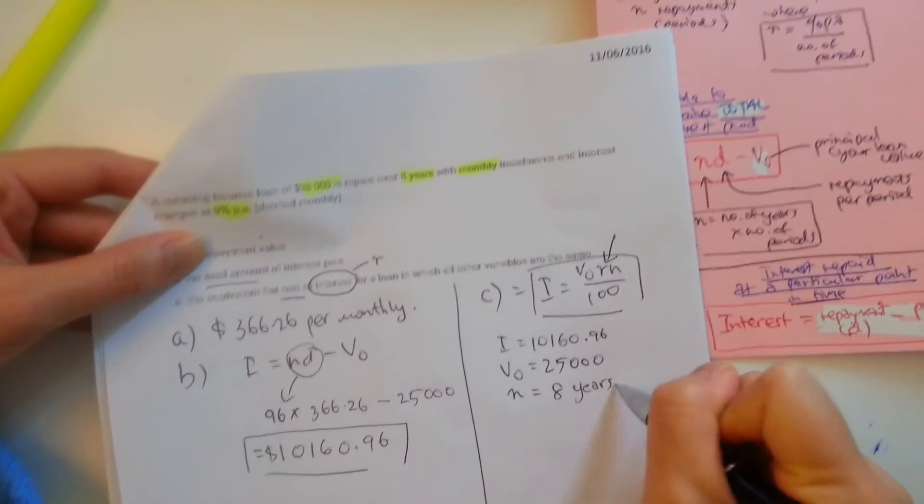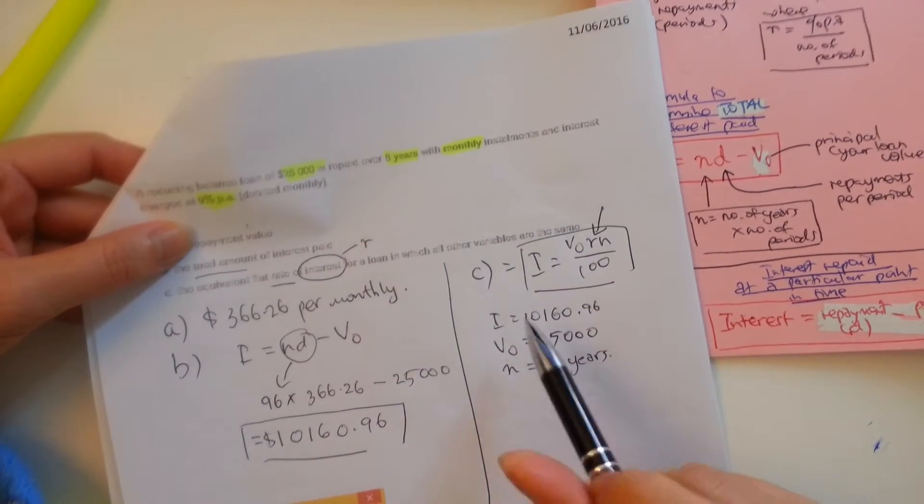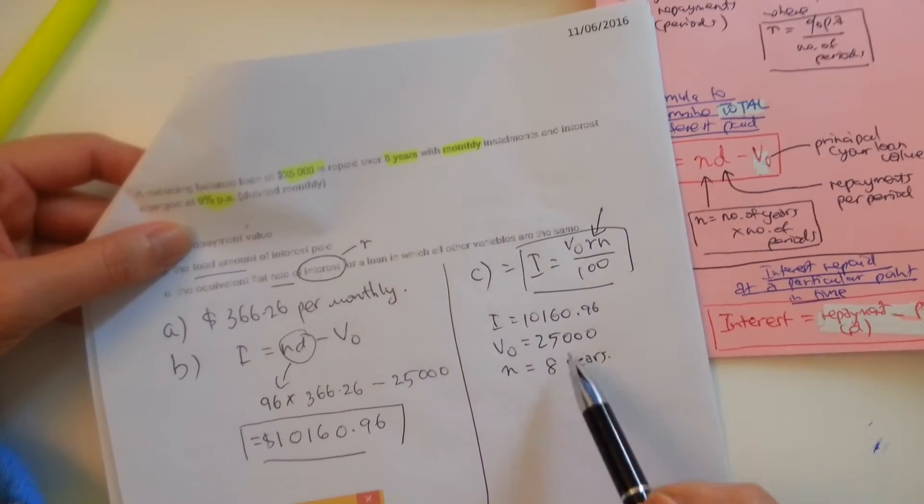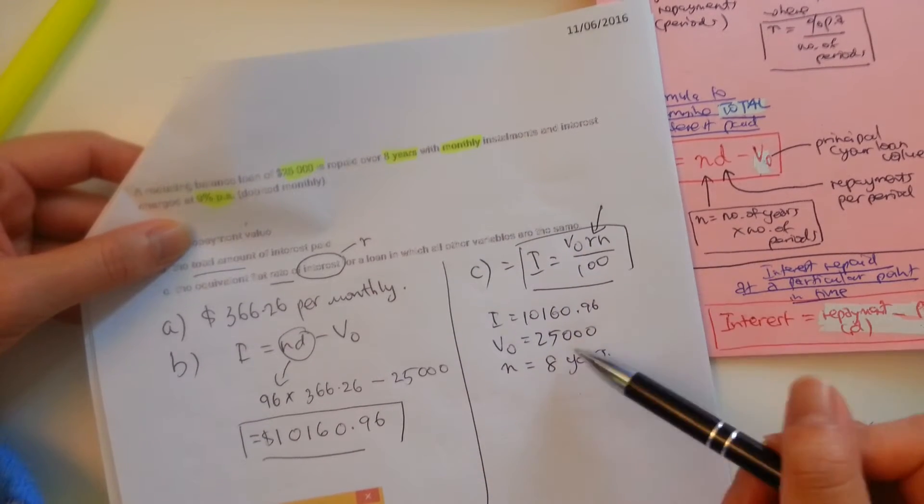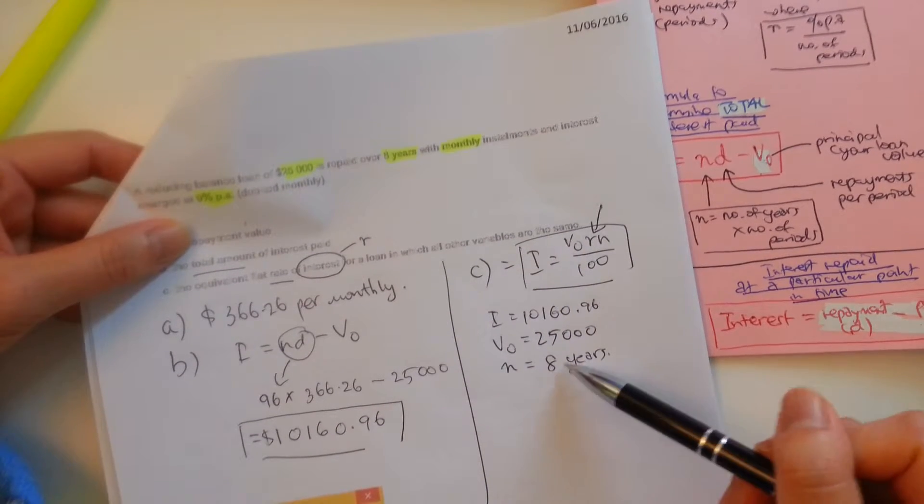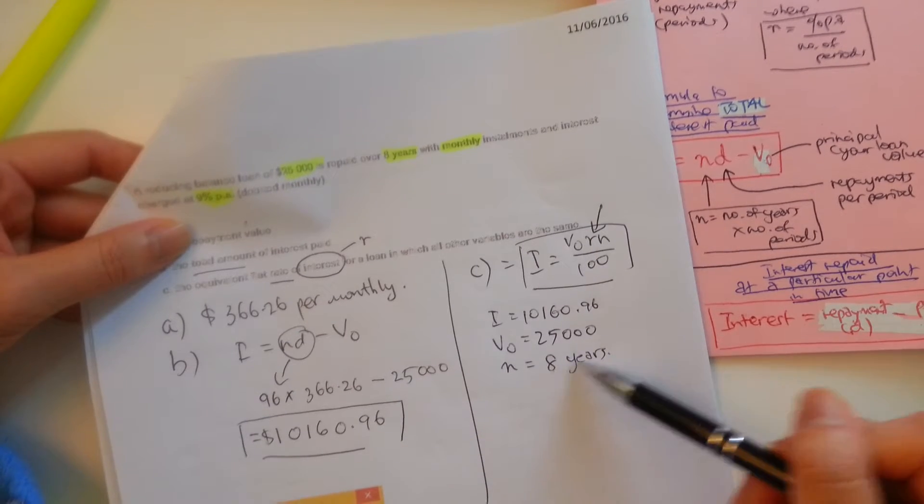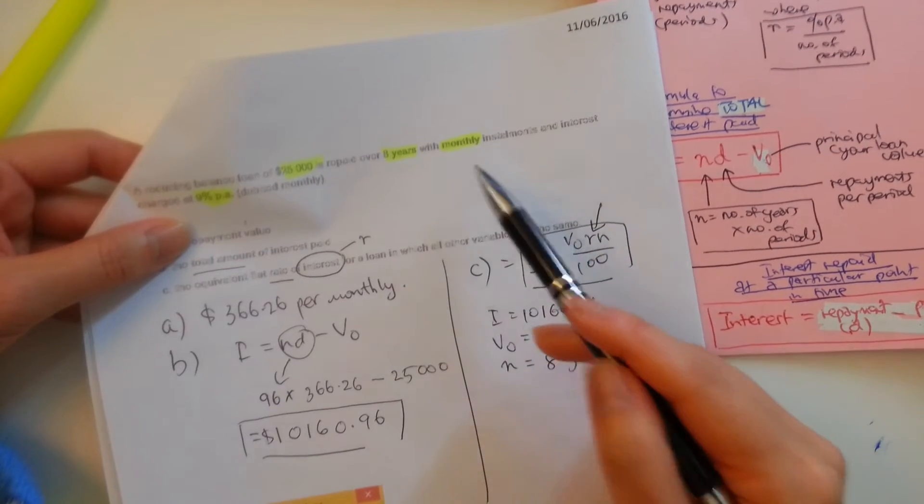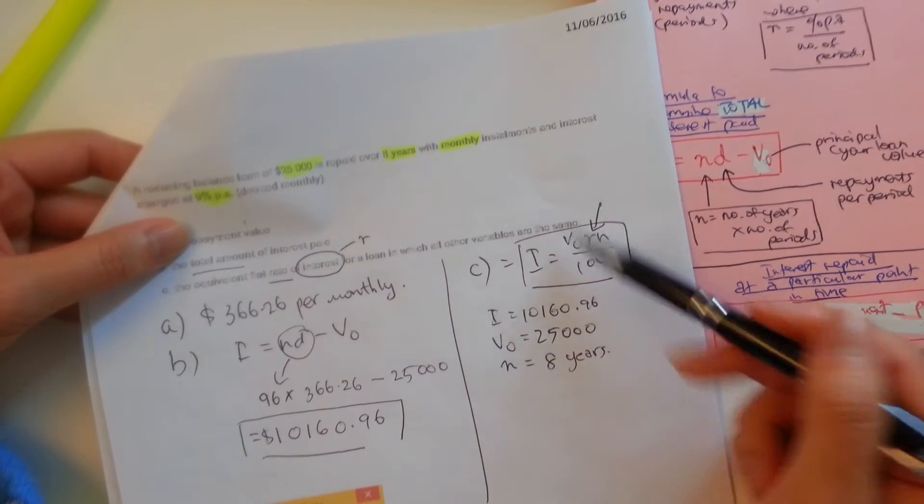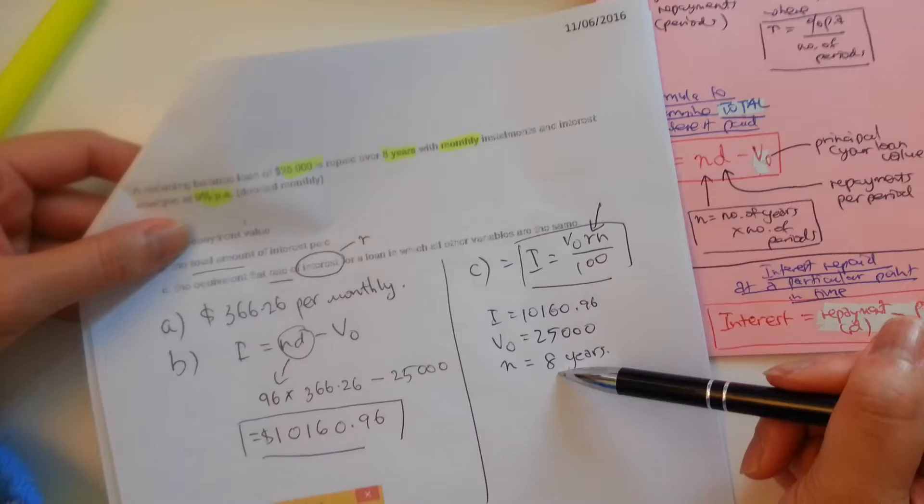Because we want, the reason why we don't change the N here to 8 times 12 is because we want the rate to also appear in years. And if we leave it to 8 times 12, which is 96 installments, then our answer for R is going to be a monthly figure. But we do, we actually want the yearly figure, so we're going to keep the N in years.